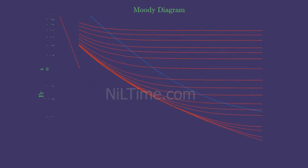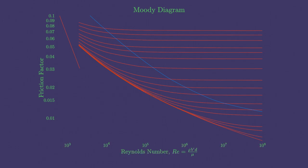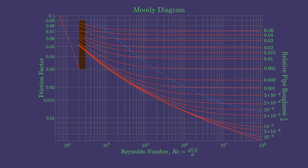The Moody chart is a graph that relates the Darcy friction factor, Reynolds number, and surface roughness for fully developed flow in a circular pipe.